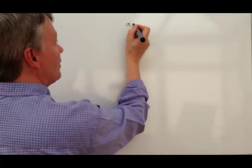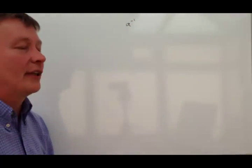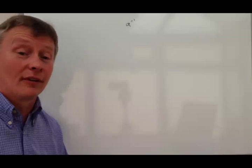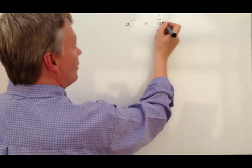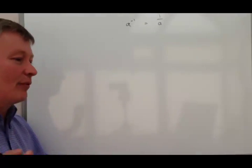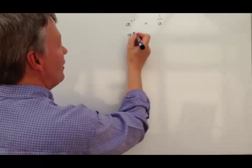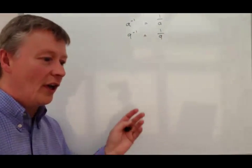So in this particular video we're going to deal with A to the power of minus 1. It's called a reciprocal, and what it basically means is it's the same as 1 over A. So I'll give you an example of that. If you've got something like 9 to the power of minus 1, it's the same as saying 1 over 9.